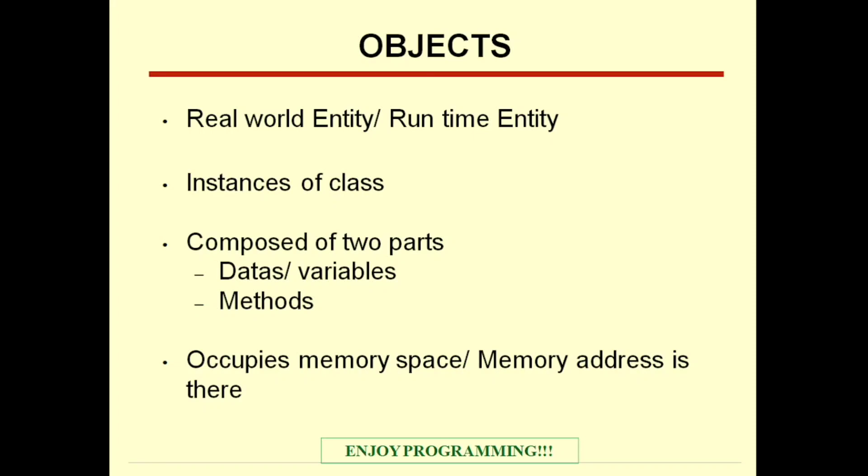Objects contain two parts: datas or variables and methods. This is very similar to that of the classes. And objects occupy memory space because we assign values and over these values, we will exhibit some computation. Objects occupy memory space and of course, it will have some memory address.